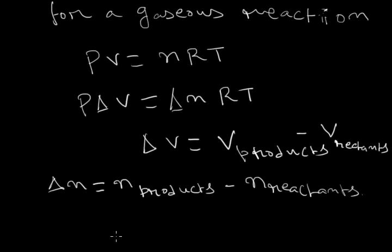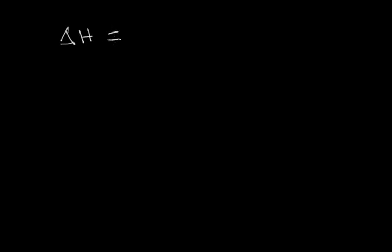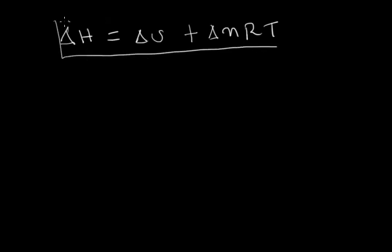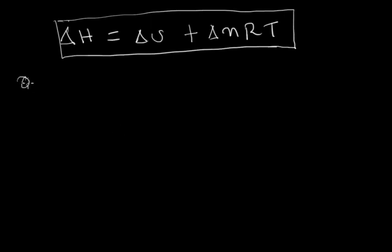So we can write in place of P delta V the term delta N times RT, and the equation becomes delta H equals delta U plus delta N times RT. Mind it, this equation is valid only for gaseous reactions.